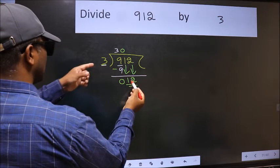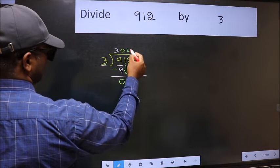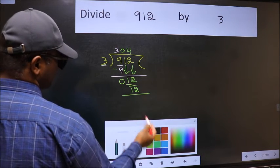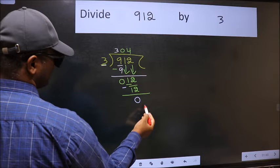Now 12. When do we get 12 in the 3 table? 3 times 4 is 12. Now we should subtract. We get 0.